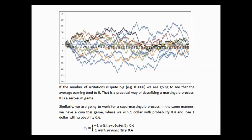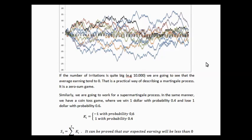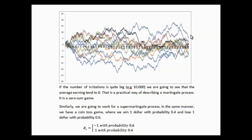As we can see in the graph here, our earnings, as t gets bigger, tend to concentrate around 0. If the number of iterations is quite big, for example 10,000 iterations, we are going to see that the average earnings tends to 0. The distribution would have a certain variance but the mean would be 0. So, that's a practical way of describing a martingale process. It is a zero-sum game.